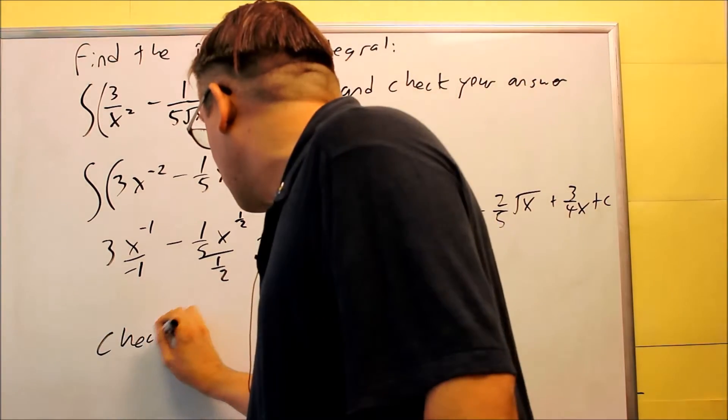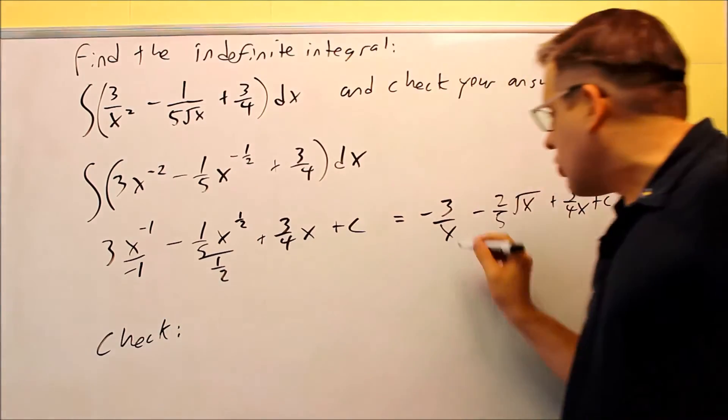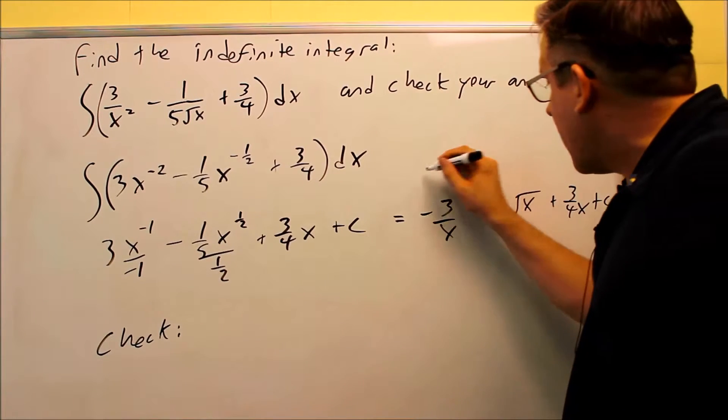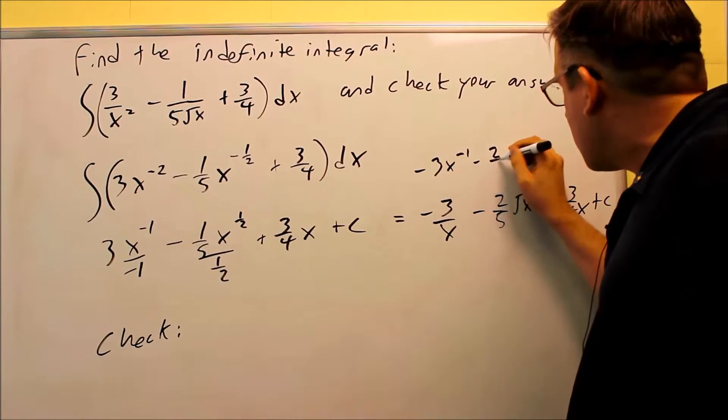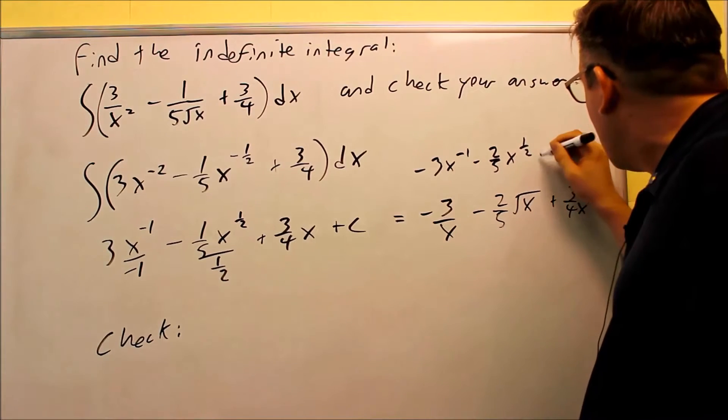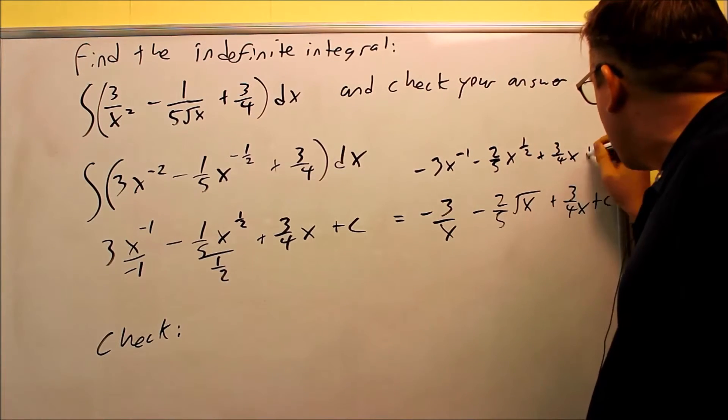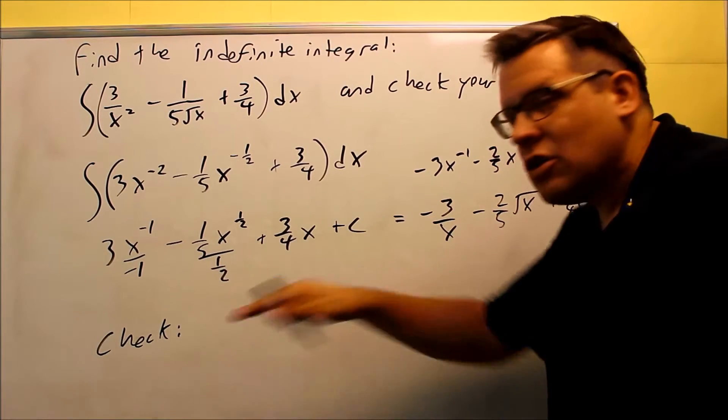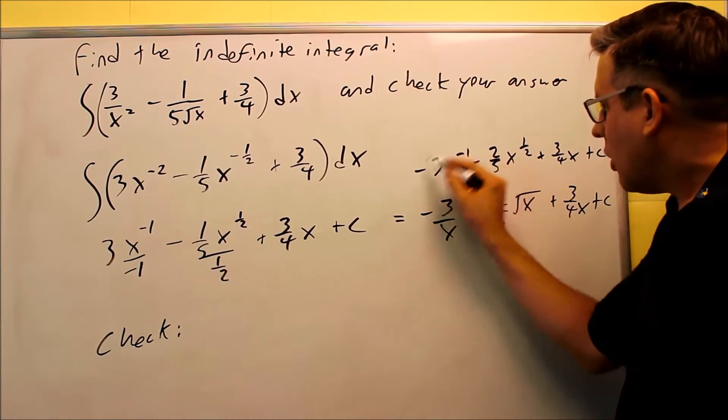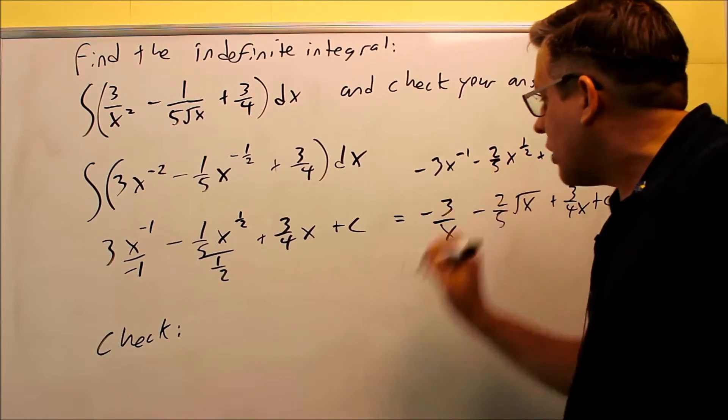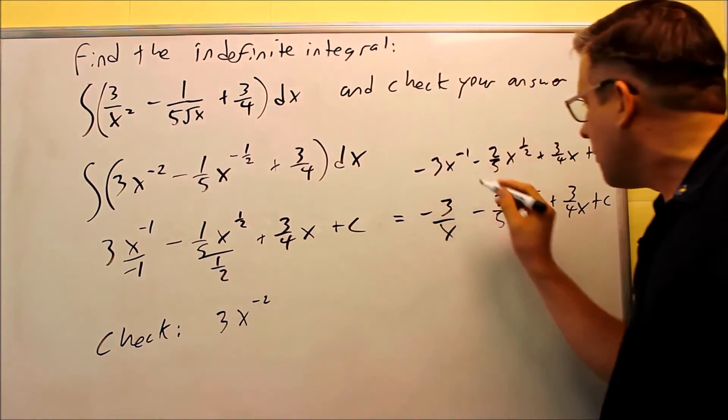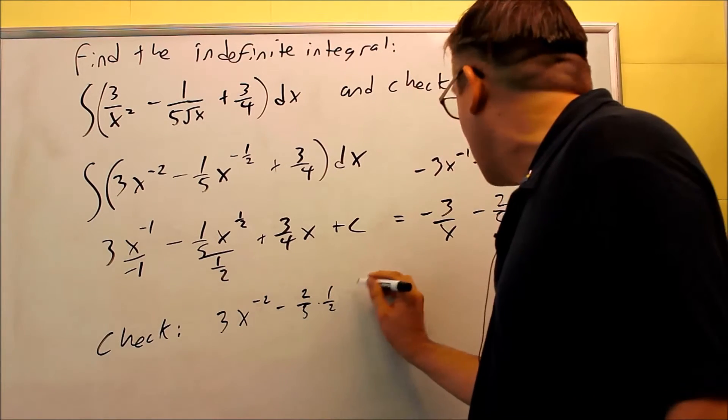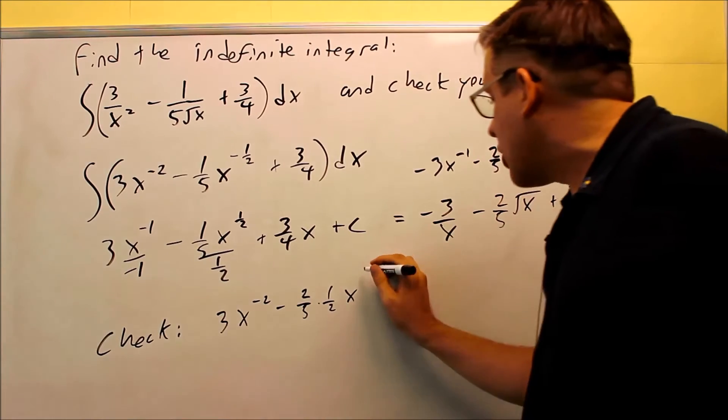We want to do a check on this. So a check means that I would take the derivative of what I see right here. So remember, what I had before was 3x to the negative 1 minus 2 fifths x to the 1 half plus 3 fourths x plus c. This is what it would look like if not in this form. This is what I can use to check my answer since I've got to take a derivative of it. For this one, negative comes down to here. I would get 3x to the negative 2.